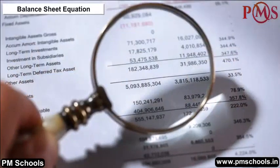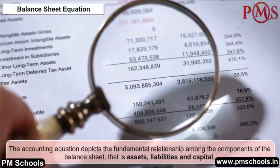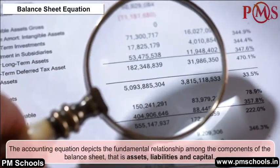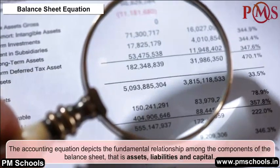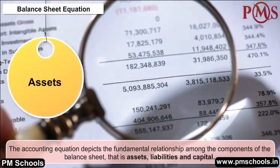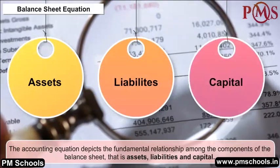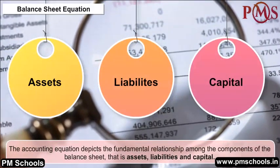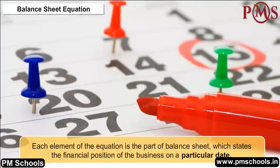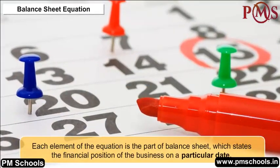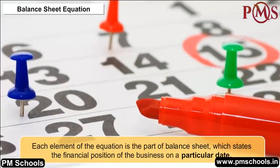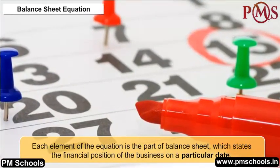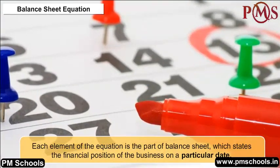Balance Sheet Equation: The accounting equation depicts the fundamental relationship among the components of the balance sheet — assets, liabilities, and capital. Hence, it is also called the balance sheet equation. Each element of the equation is part of the balance sheet, which states the financial position of the business on a particular date.